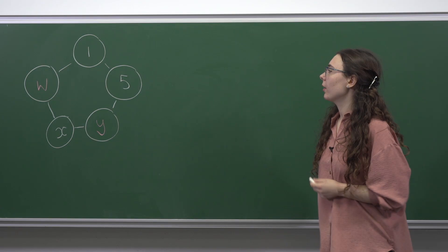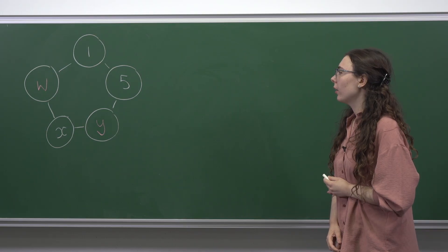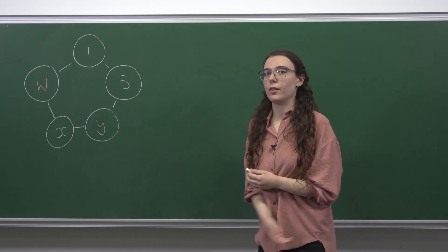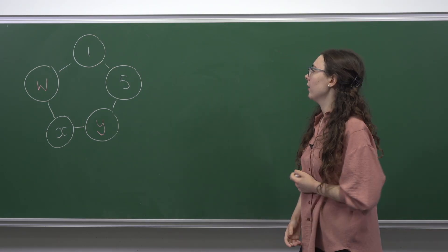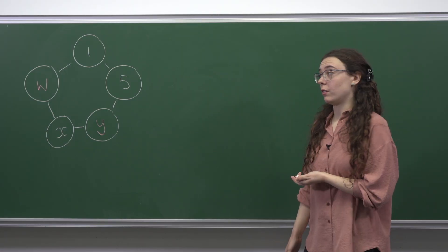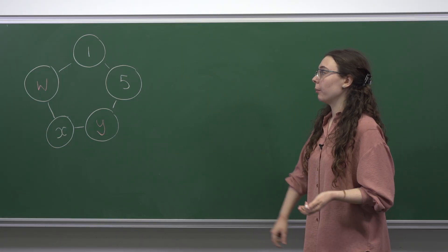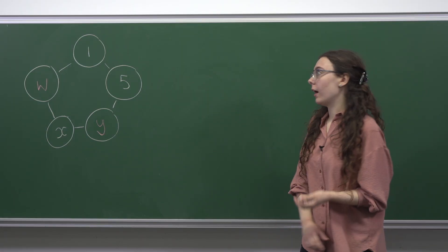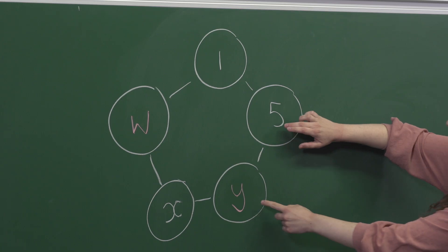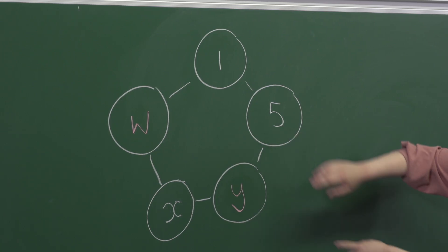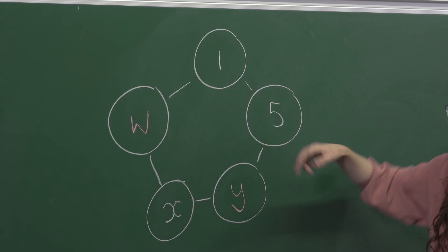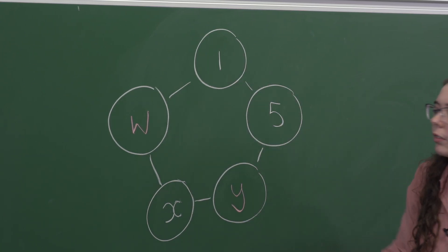We have this diagram and we're told that we've got to fill it in such a way that any number between 1 and 21 can be made by either taking a single number or the sum of two adjacent numbers, three adjacent numbers, four adjacent numbers, or all five numbers.